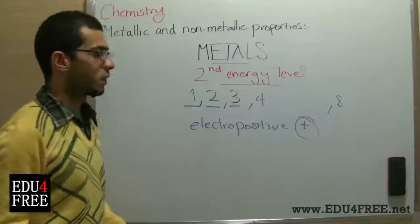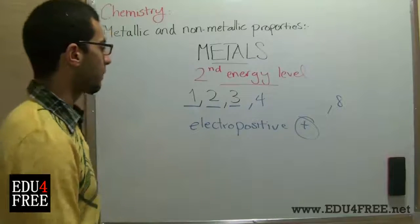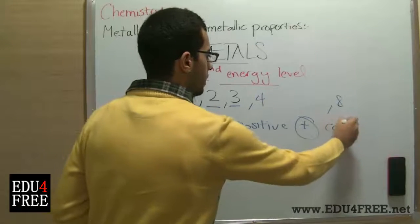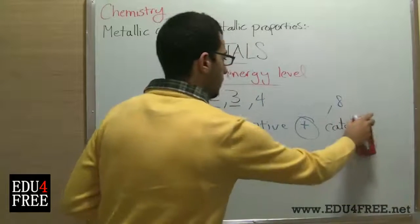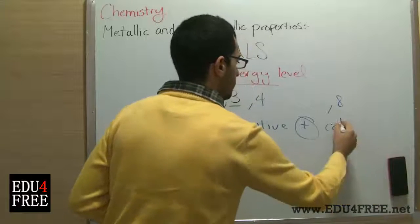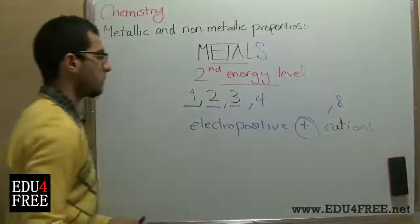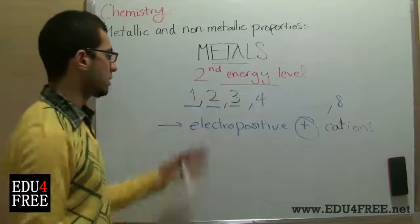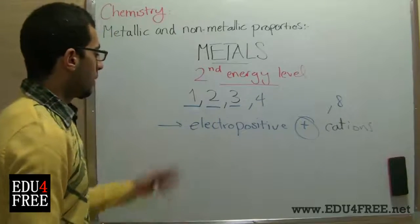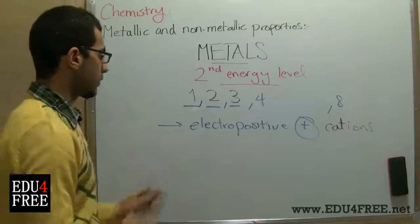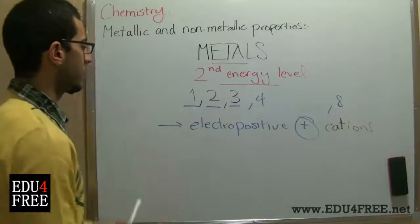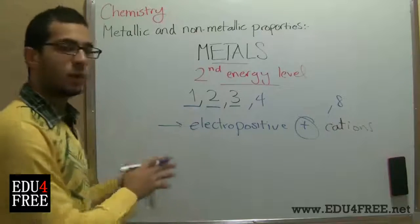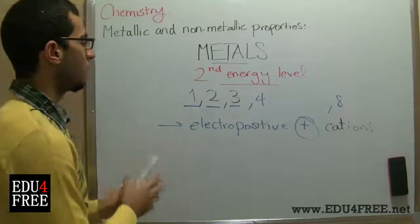As they lose electrons, they are considered electropositive. So they are always converted into positive ions — cations — because they give electrons to other atoms. This property of being electropositive means that metals easily lose their valency electrons. Metals are therefore considered electric-conducting elements; they conduct electricity easily because the valency electrons can move easily from one part to another in the metallic structure.